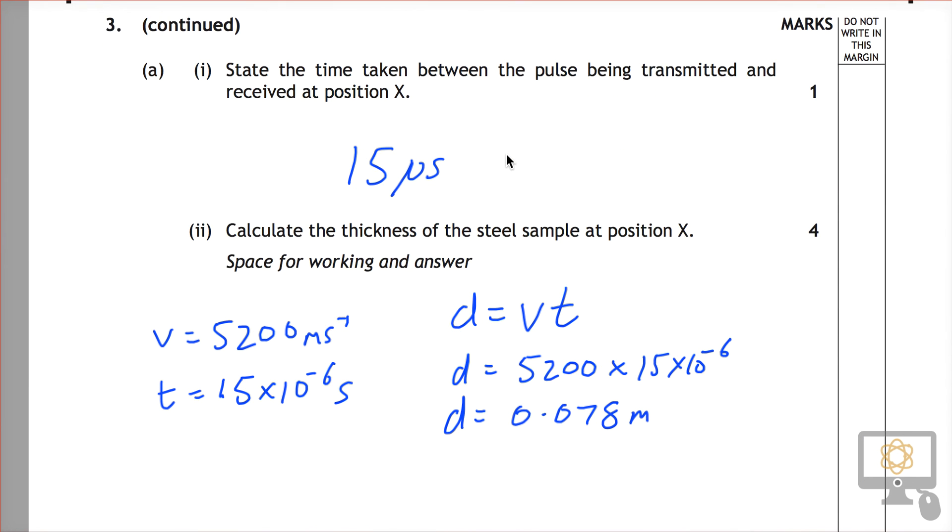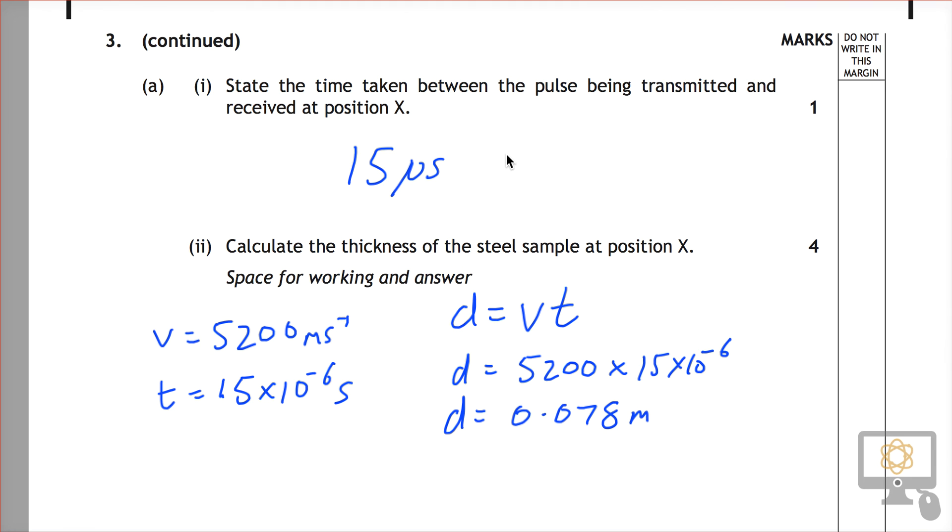So half that distance. The actual thickness of the steel—thickness is equal to that distance divided by 2, which is 0.078 over 2, which is 0.039 meters.